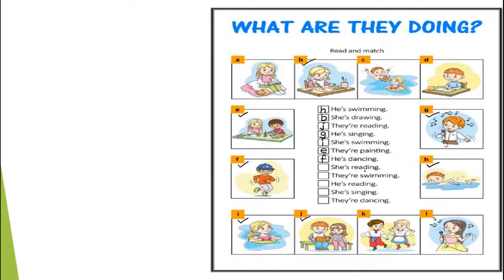Next: she is reading. The picture for this sentence is at A. Next: they are swimming — the picture is at C. Next: he is reading — the picture is at D. She is singing — the picture is at L. Last sentence: they are dancing — the picture is at K.